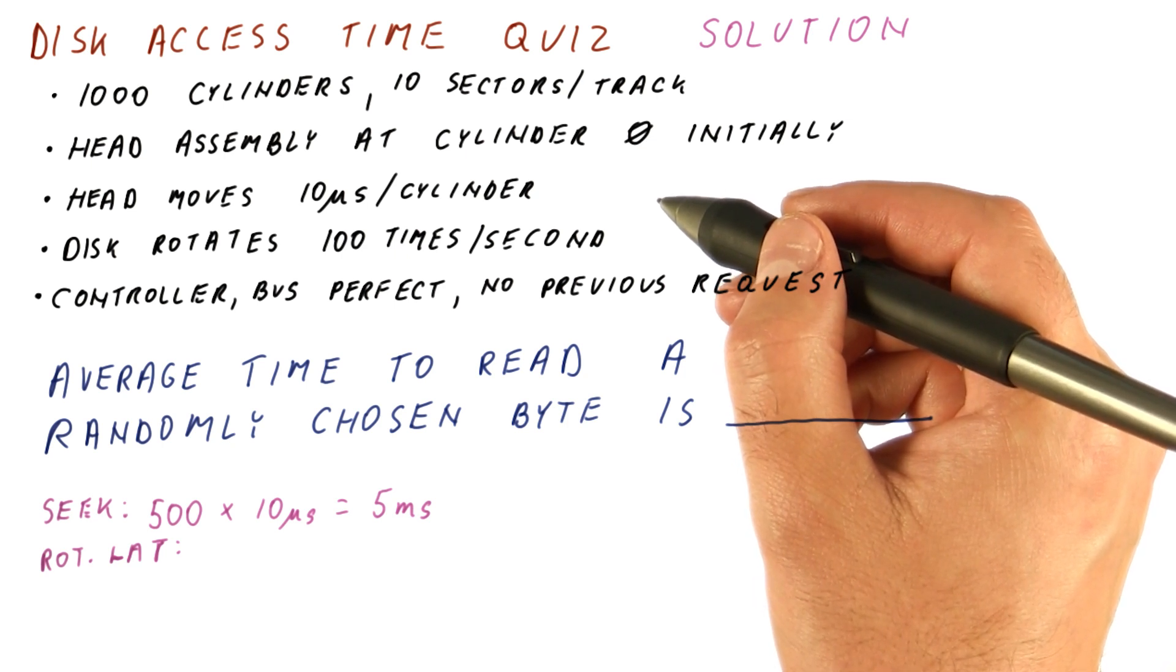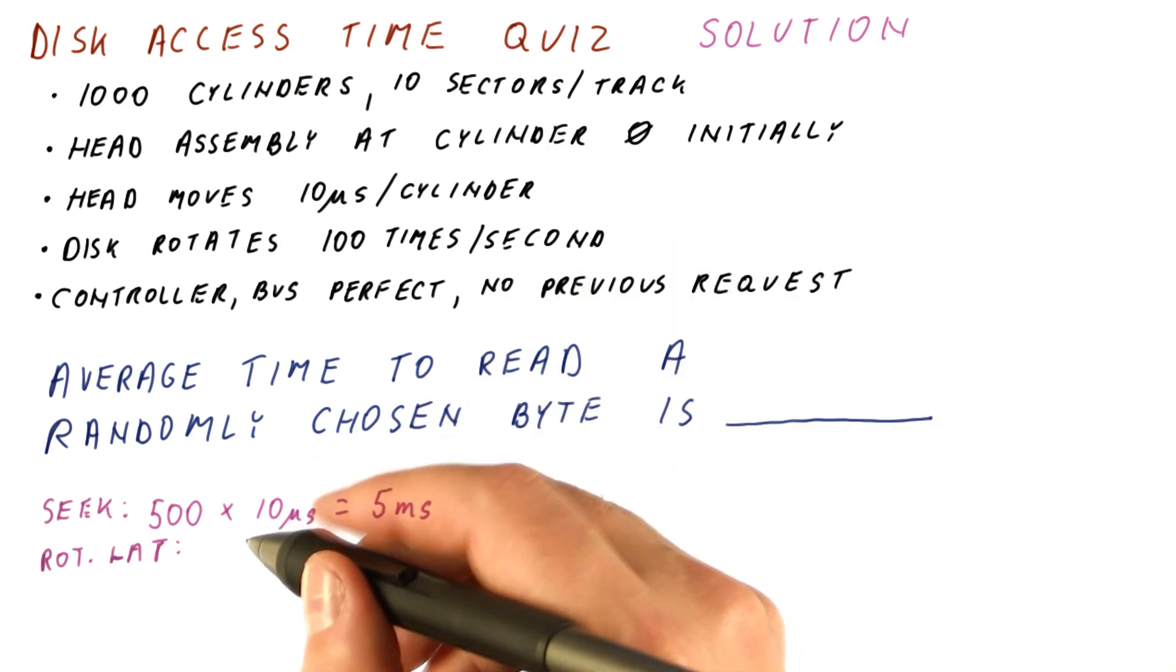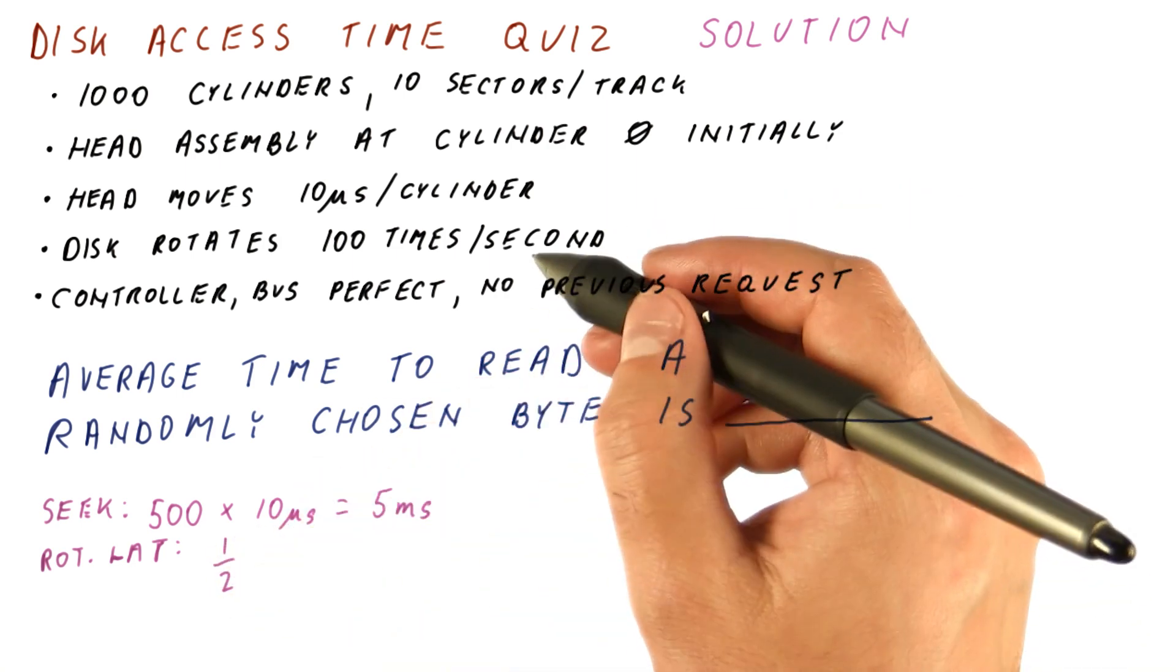So we will not be able to read that sector even though we are technically right above the data we want to read. We will have to wait for the beginning of the sector to get back, which is a whole rotation. So on average, we will be having half a rotation.